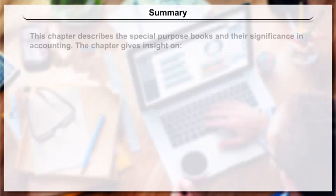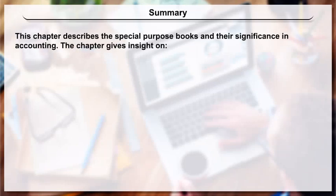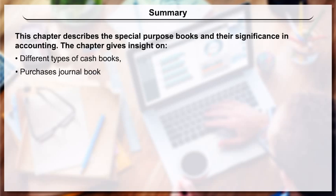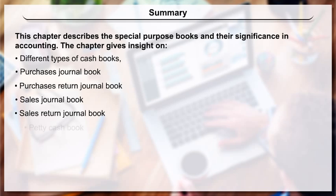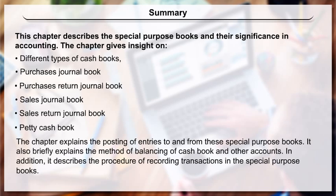Summary: This chapter describes the special purpose books and their significance in accounting. It gives insight on different types of cash books, purchases journal book, purchases return journal book, sales journal book, sales return journal book, and petty cash book. The chapter explains the posting of entries to and from these special purpose books, the method of balancing of cash book and other accounts, and the procedure of recording transactions in the special purpose books.